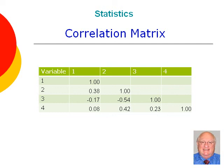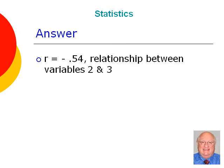Before going to the next slide, see if you can answer the following question: what pair of variables had the strongest relationship, or correlation, in this matrix? The answer is the correlation equal to negative 0.54, or the relationship between variables 2 and 3. Remember, what determines the strength of a relationship is how far the correlation is from 0 in either a positive or negative direction, or how close the correlation comes to either a positive or negative 1.